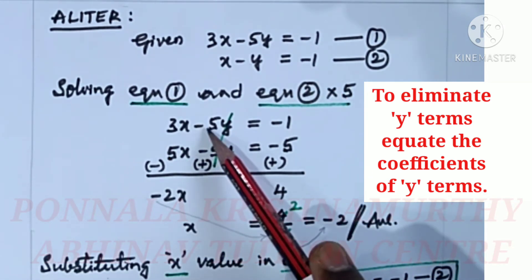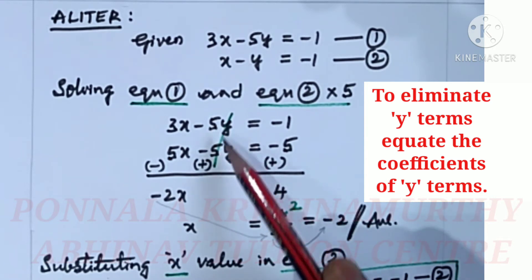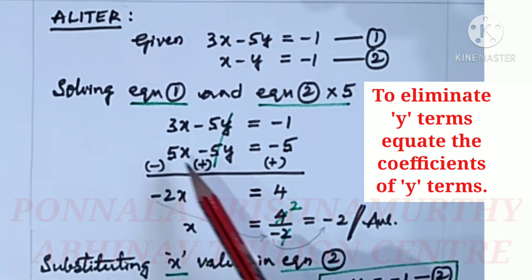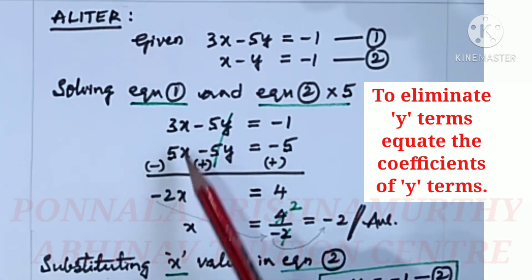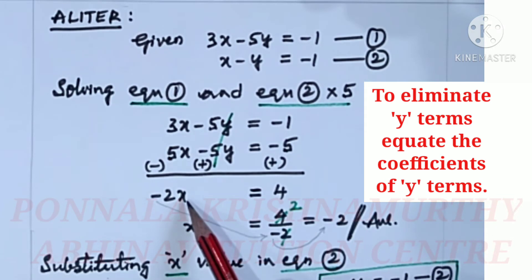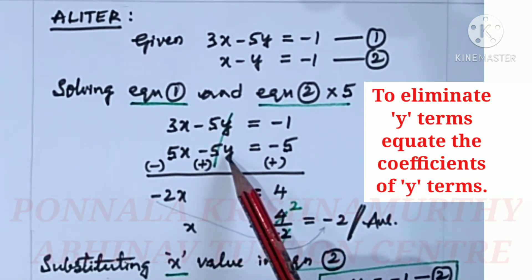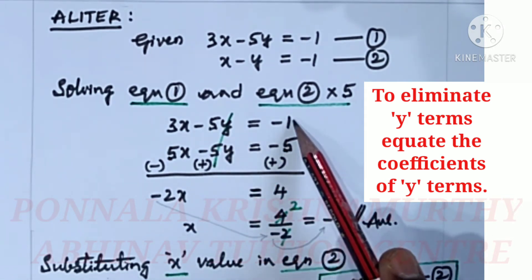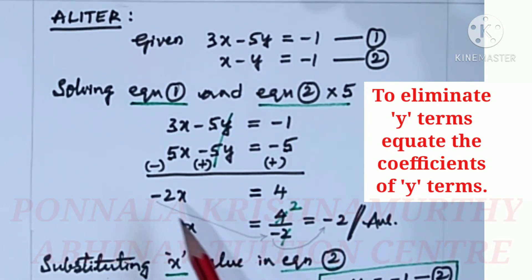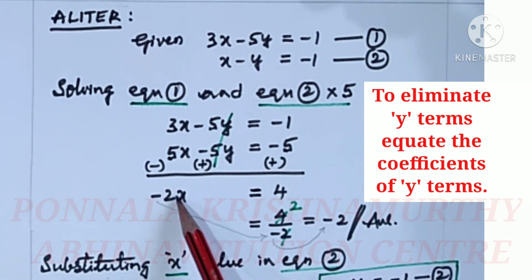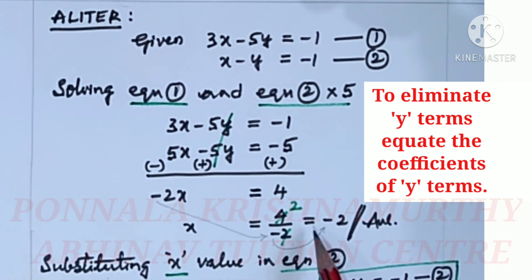Since these two y terms have the same sign, we cannot cancel. So we change the signs of equation 2: 3x minus 5x is minus 2x. Minus 5y plus 5y cancels. Minus 1 plus 5 is 4. So x is equal to 4 by minus 2. Observe carefully — this minus does not become plus, so it remains minus 2. Two twos are cancelled: x is equal to minus 2.